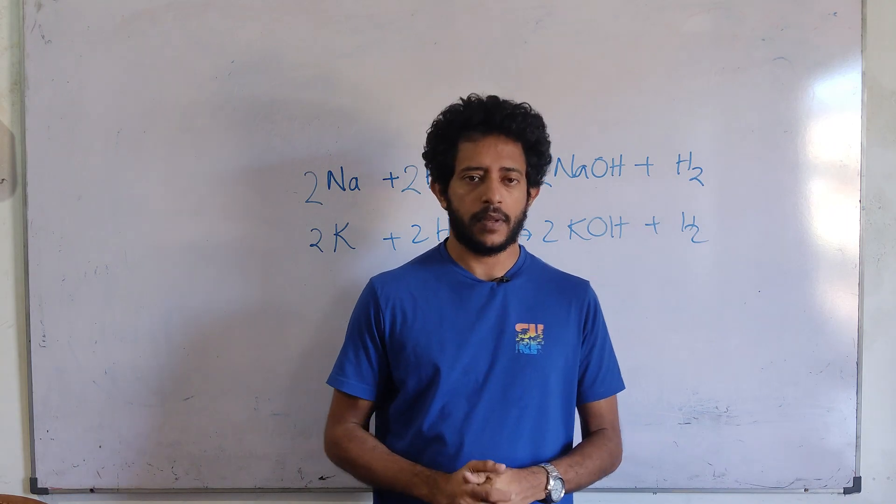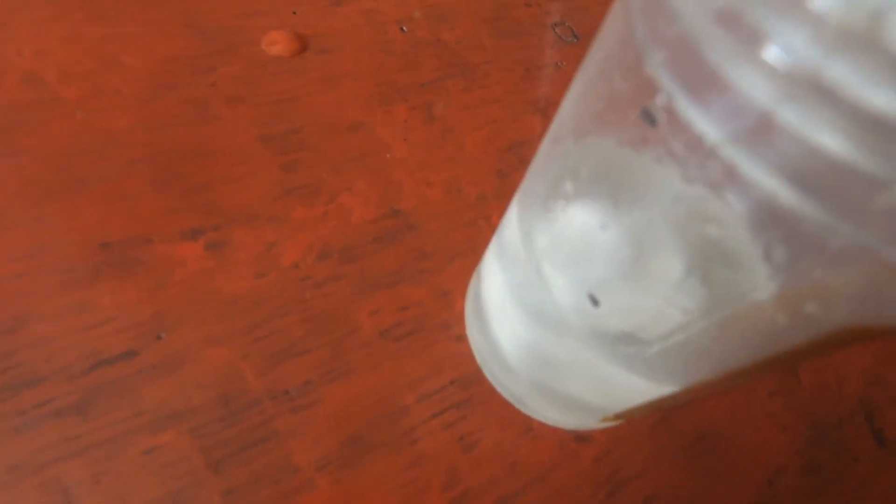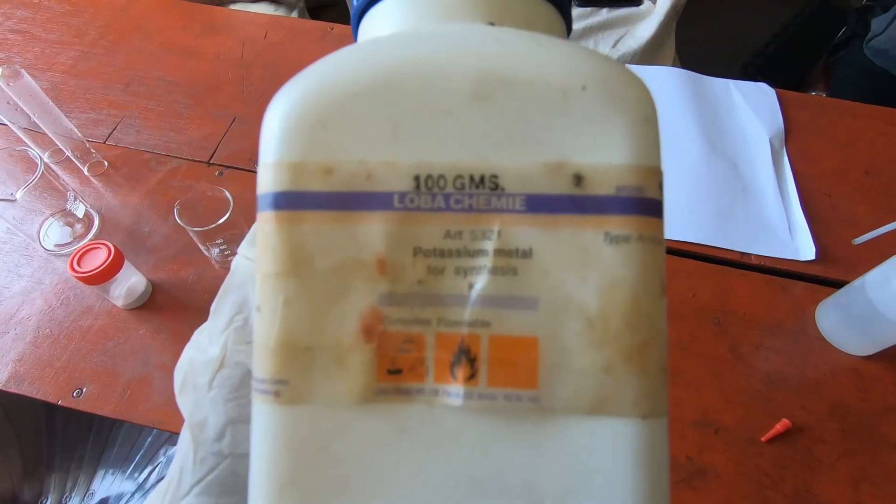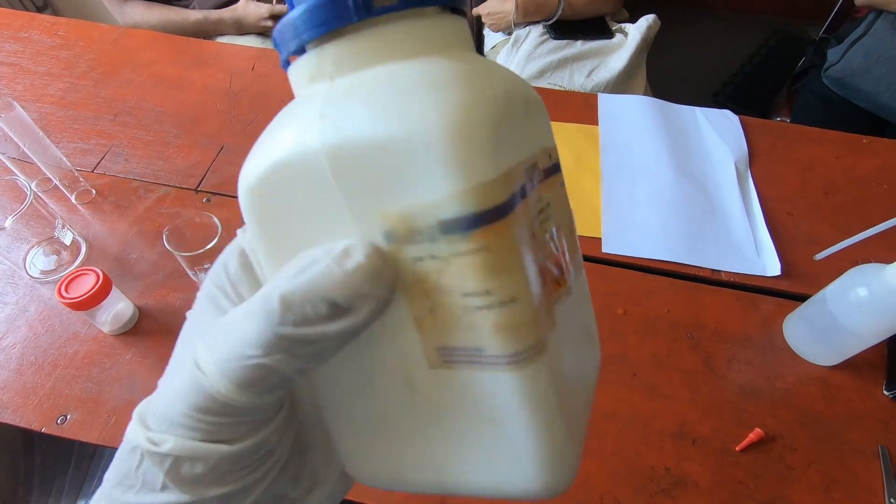This is common reactions and this is metal sodium. Sodium is stored under paraffin oil and this is potassium. Potassium also stored under paraffin oil.